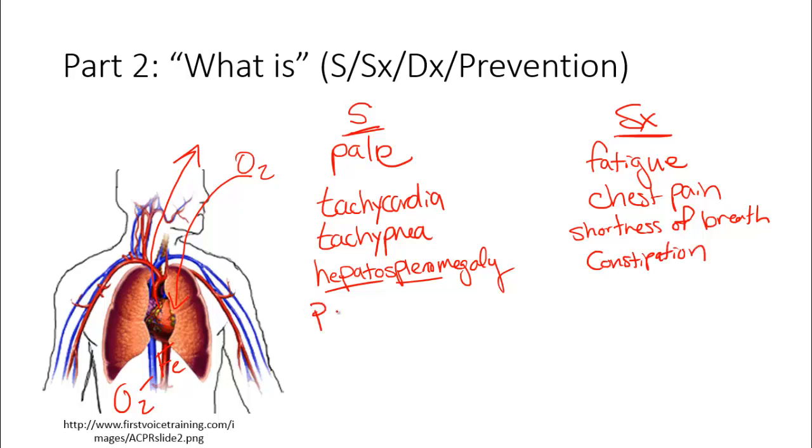Another sign is called pica. Pica is where they start chewing on substances that they think have iron in it, such as ice being a very big one. There's also clay and dirt as well.